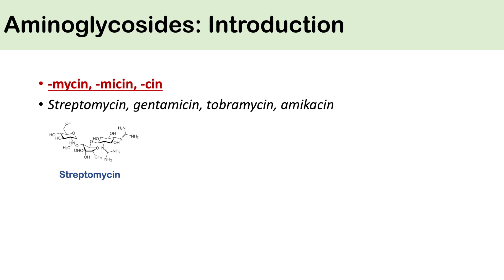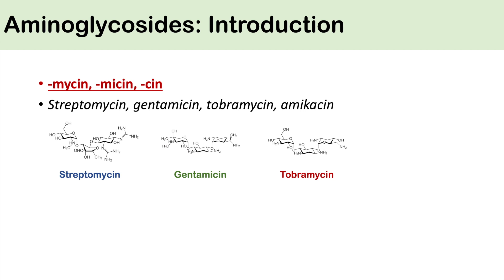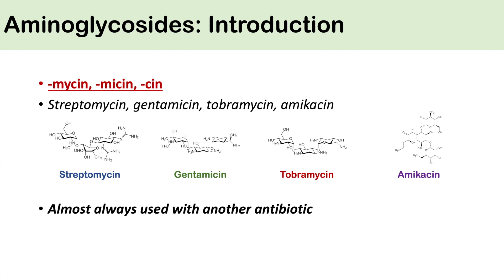Streptomycin was actually the first aminoglycoside, and it was discovered in Streptomyces bacteria. The other aminoglycosides were all developed later on, including gentamicin, tobramycin, and amikacin.